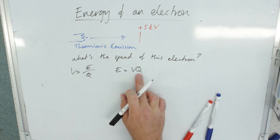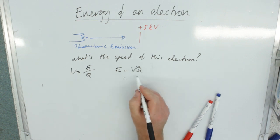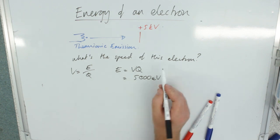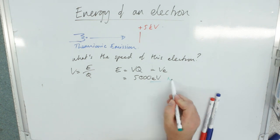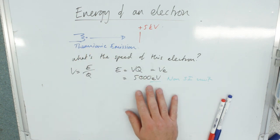And actually, because we know Q is e, we can really simply do this sum because we can say it is 5,000 electron volts. E, in this case, is VE or EV. This is a really useful non-SI unit for particle physics, because very quickly, we know how much energy we are talking about. Each individual electron has this much energy.